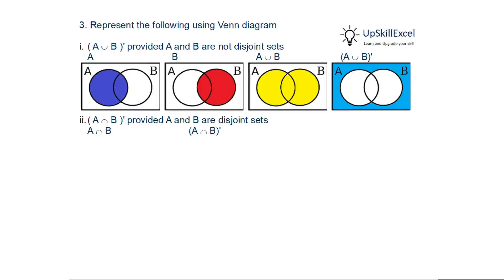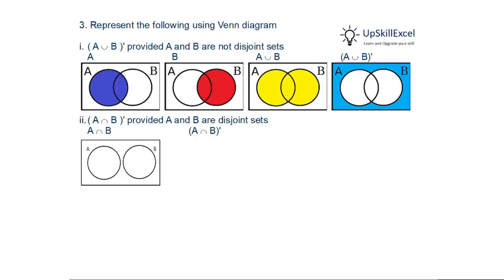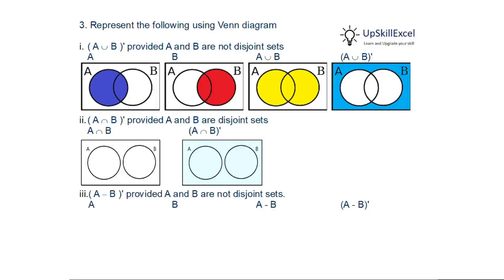Second question: A intersection B complement. Here A and B are disjoint sets, meaning there is no intersection. We represent A and B as two non-overlapping circles. Since the intersection is empty, the complement of the intersection gives the complete universal set U.